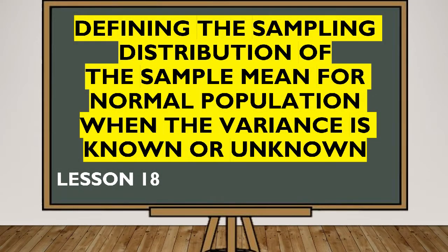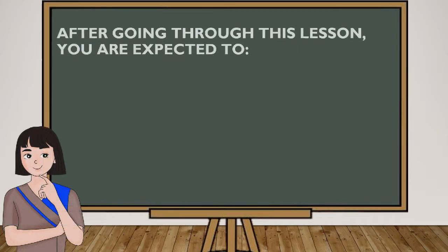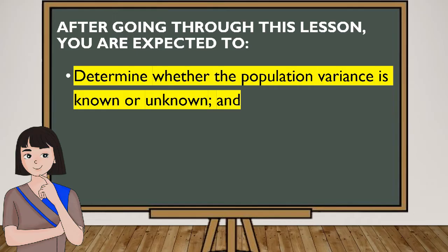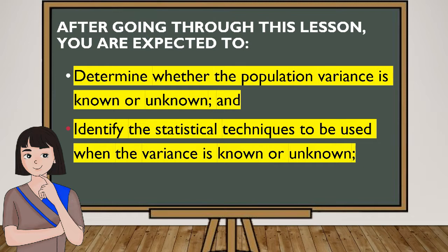Hello everyone, welcome again to another lesson in statistics and probability. In this lesson you will learn how to define the sampling distribution of the sample mean for a normal population when the variance is known or unknown. After going through this lesson, you are expected to first determine whether the population variance is known or unknown and identify the statistical techniques to be used.